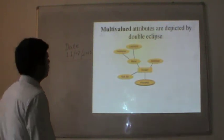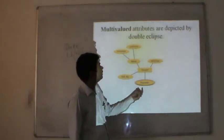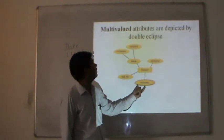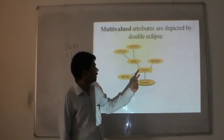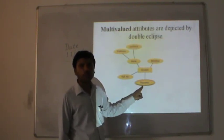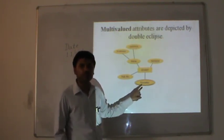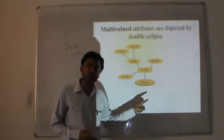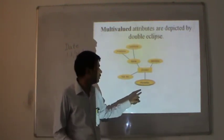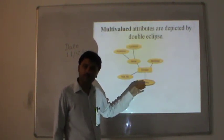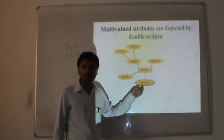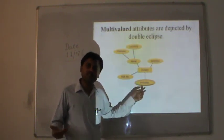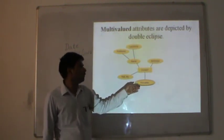Multi-valued attributes are depicted by a double-line ellipse. A student can have more than one phone number — this is possible, and many persons have more than one phone number. You can have more than one oval shape to show multi-valued attributes.